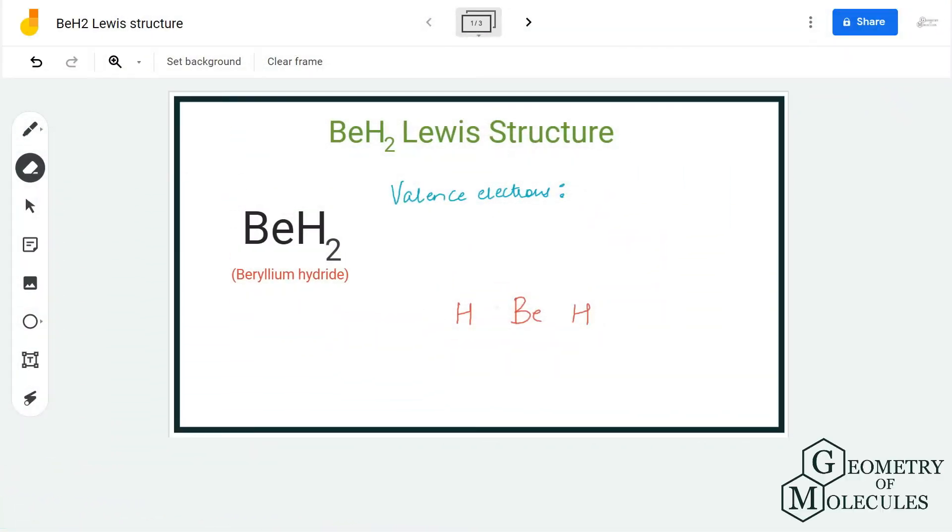Hi guys, welcome back to our channel. In today's video we are going to determine the Lewis structure for BeH2 molecule, the chemical formula for beryllium hydride. To determine its structure, we are first going to look at the total number of valence electrons.